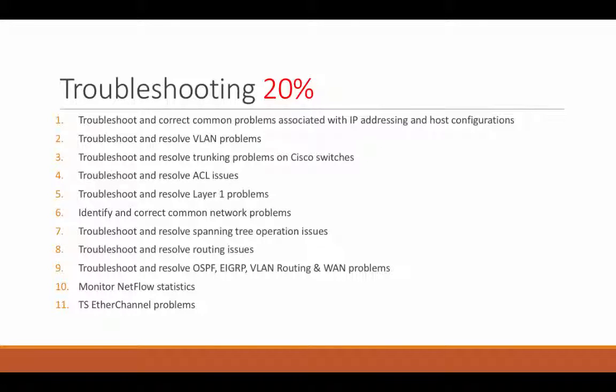Troubleshooting is 20%. We'll troubleshoot and correct common problems associated with IP addressing and host configurations, troubleshoot and resolve VLAN problems, trunking problems on Cisco switches, ACL issues, Layer 1 problems, and identify and correct common network problems in general. We'll also resolve spanning tree operation issues, resolve routing issues, troubleshoot and resolve OSPF, EIGRP, VLAN routing and WAN problems, and monitor NetFlow statistics and EtherChannel problems as well.